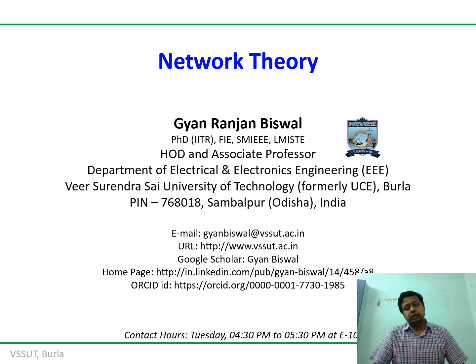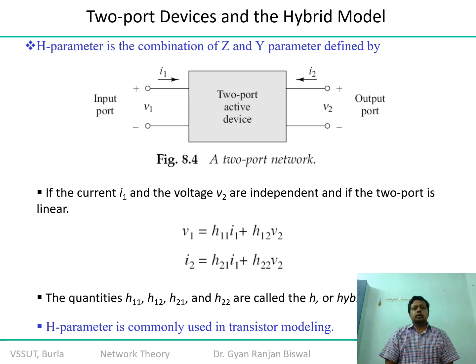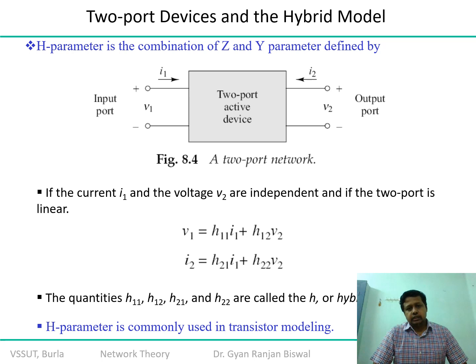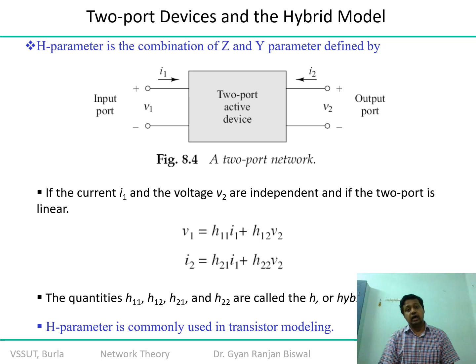Here is a typical demonstration of a hybrid model. One equation is defined as V1 = H11·I1 + H12·V2, and the second equation is represented in terms of I2: I2 = H21·I1 + H22·V2. This combination is clearly a junction of Z parameter and Y parameter involvement.